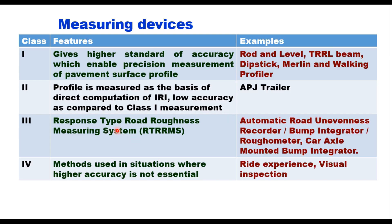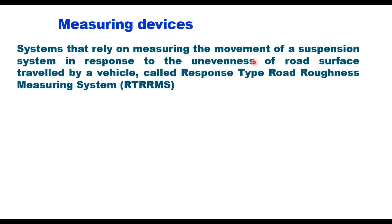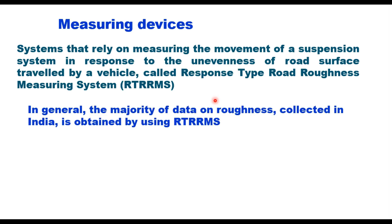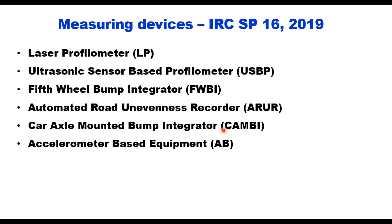Class 3 instruments are response type road roughness measuring systems that rely on measuring the movement of a suspension system in response to road surface unevenness — called RTRRMS. In general, the majority of roughness data collected in India is obtained using RTRRMS. Several device types are listed in IRC SP 16:2019, including laser profilometer, ultrasonic sensor-based profilometer, fifth wheel bump integrator, automatic road unevenness recorder, car axle-mounted bump integrator, and accelerometer-based equipment.